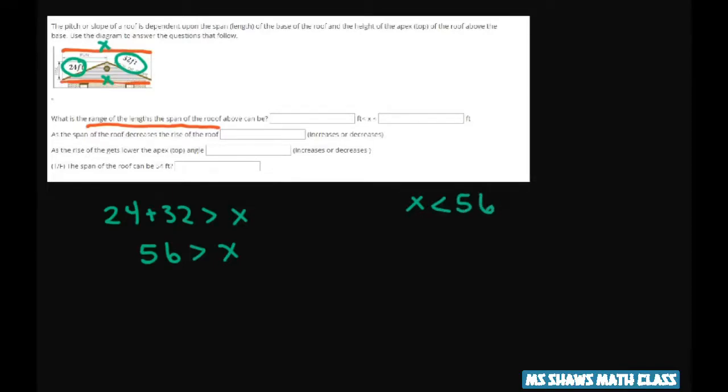Now we have to find this lower portion here. What you do is you add up the sides again, and this time you take x plus 24. So x plus 24 has to be greater than 32. So x has to be greater than 8. Now just note, it wouldn't work if you switch these numbers because you'd get a negative number. So the range is going to be from 8 to 56.